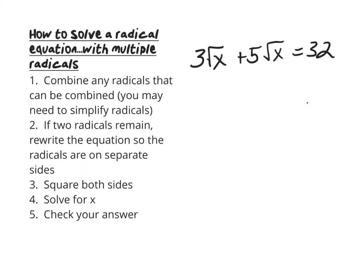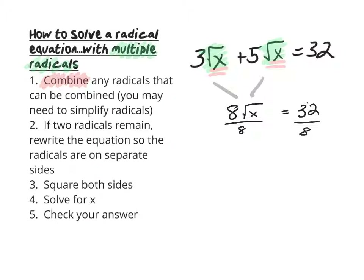Now, a few radical equations will have multiple radicals in them, which we'll cover quickly here. Here I can see there's a square root in two places. The first thing we want to try when we see multiple radicals is to combine them if we can. Both radical expressions here have the same radicand, so we are able to combine them. If we had 3 square roots of x and added 5 more square roots of x, we'd have 8 square roots of x. Then we divide both sides by 8, leaving the square root of x equals 4, and squaring both sides gives x equals 16.